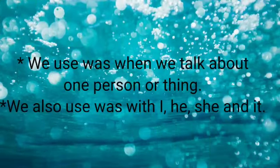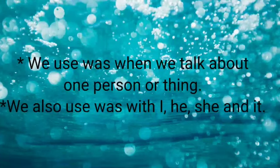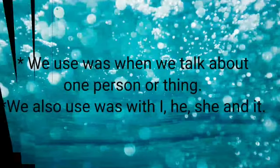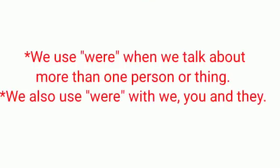We use 'was' when we talk about one person or thing. We also use 'was' with I, he, she, and it. We use 'were' when we talk about more than one person or thing. We also use 'were' with we, you, and they.